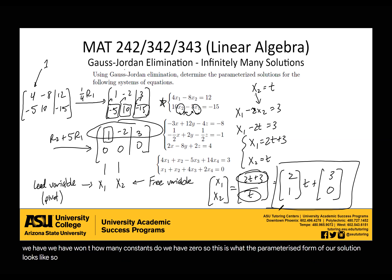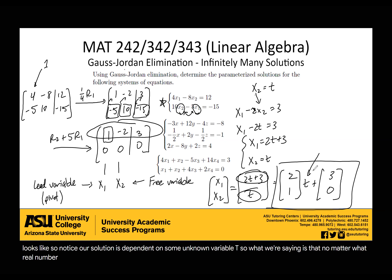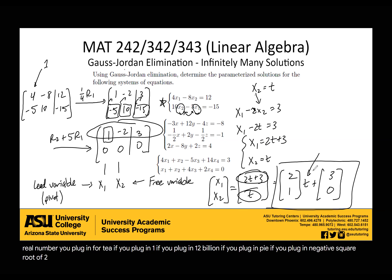Our solution is dependent on some unknown variable t. No matter what real number you plug in for t — whether you plug in 1, 12 billion, pi, or negative square root of 2 — you're going to get a solution to your equation. Let's test that right now.